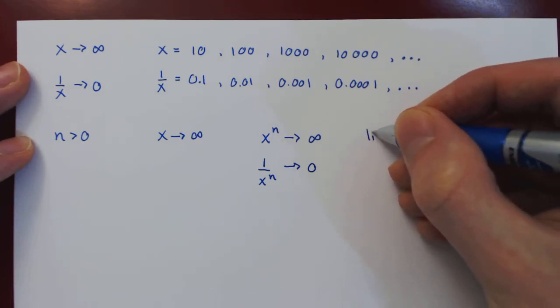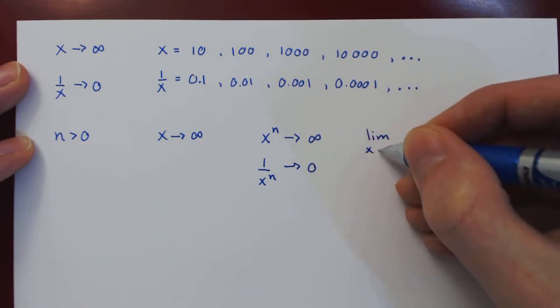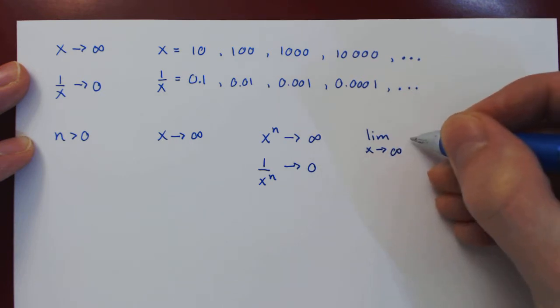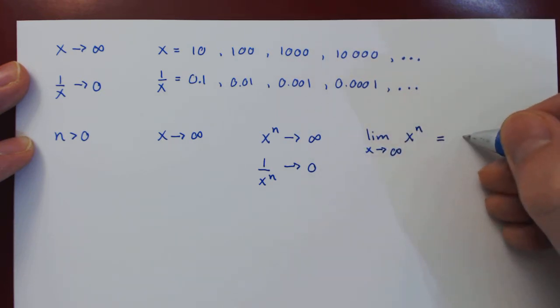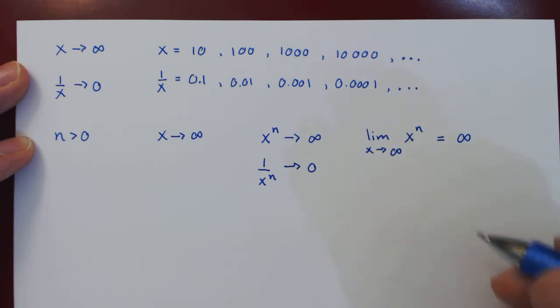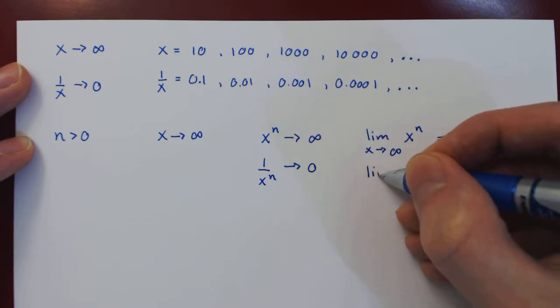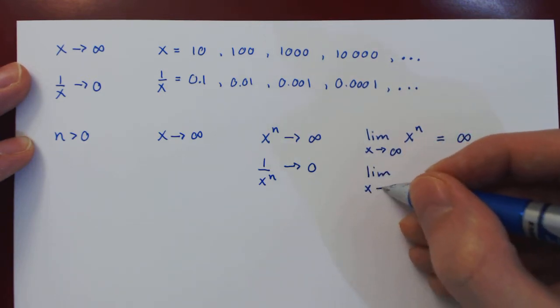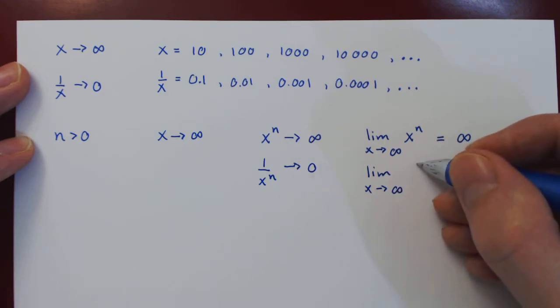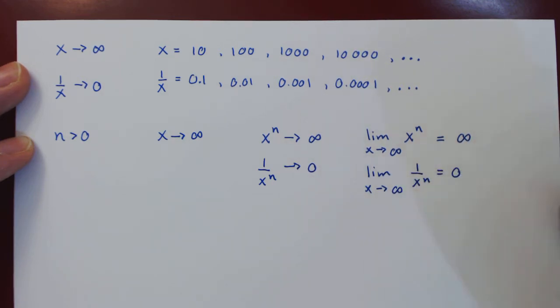In the first case, the limit as x goes to positive infinity of any positive power of x will also be approaching positive infinity. And the limit as x approaches infinity of the reciprocal 1 over x to the n will be approaching 0.